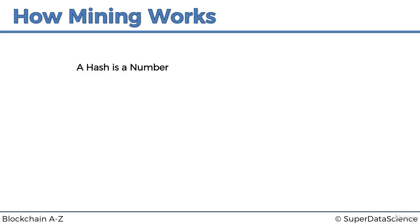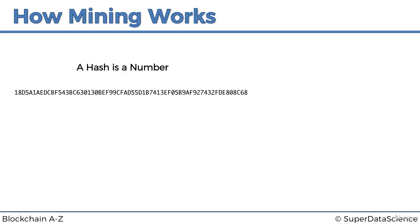Here is an example of a hash — a proper SHA-256 hash. It takes up 64 digits, representing 256 bits. The statement is that this is actually a number. It's not just a word, not just a combination of characters, not just a label — it's an actual number. So you can increment it and perform mathematical operations with it.